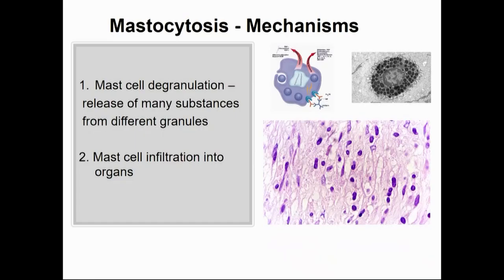The total tryptase level is greater than 20. In mastocytosis, there are two mechanisms. The majority of patients just have their symptoms from mast cell degranulation and release of many substances. But in a small minority, there's actual mast cell infiltration in a more aggressive form into the organs — usually called aggressive mastocytosis — and the prognosis there is not so good.